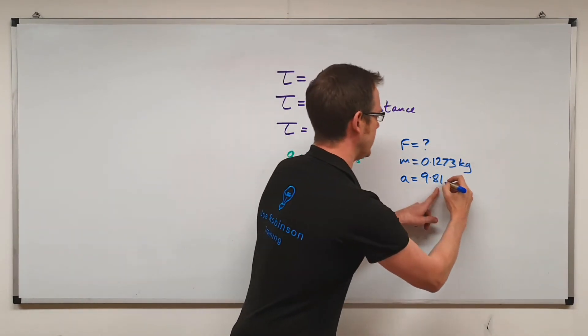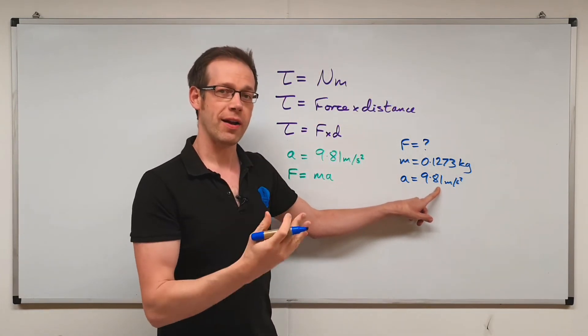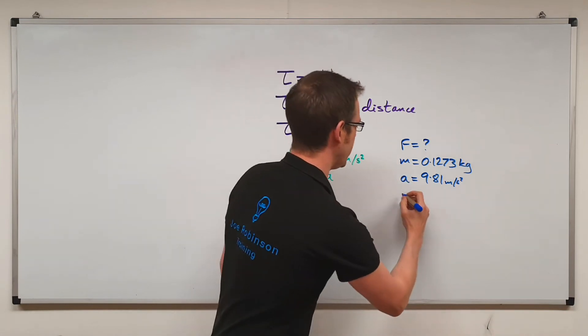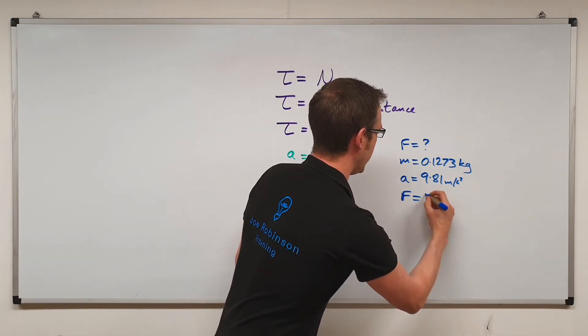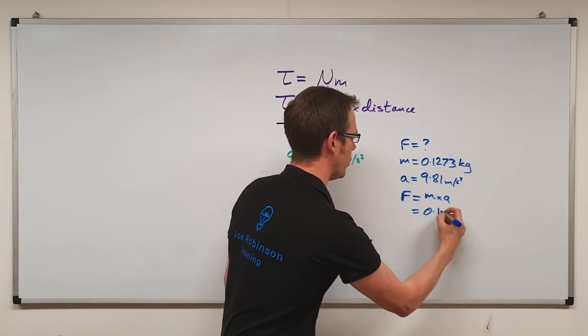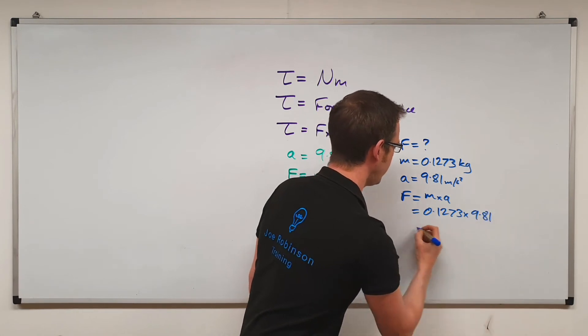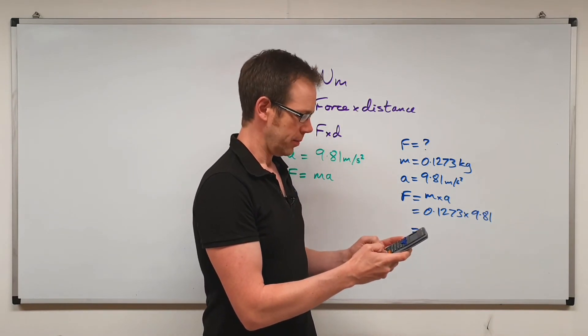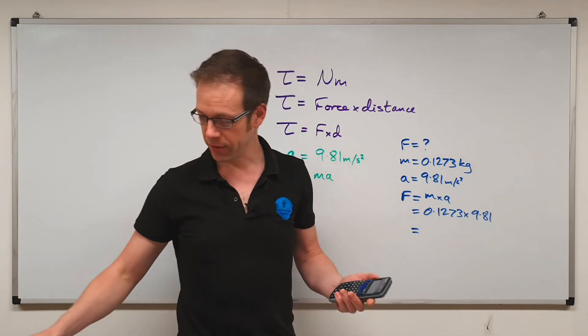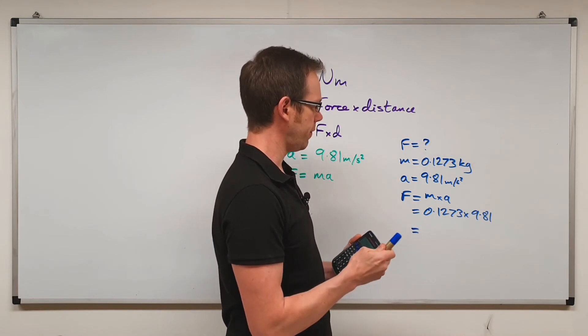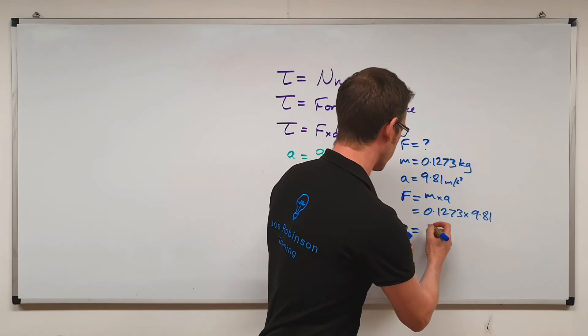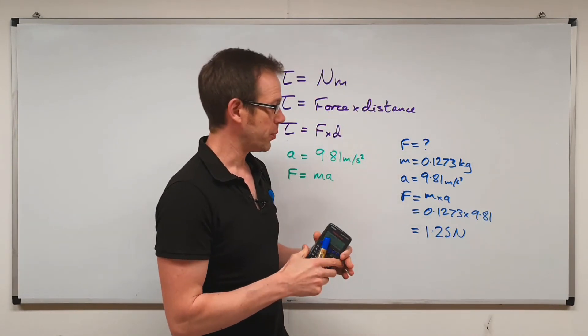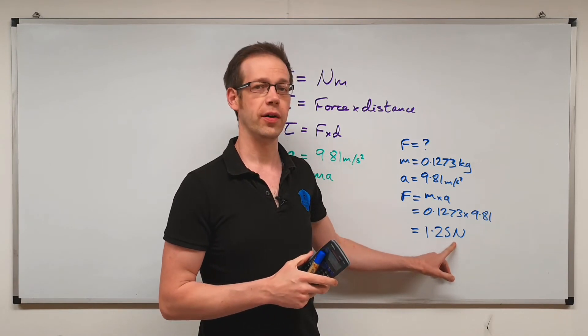And we've got this mathematical constant for the acceleration, which is 9.81. So remember, this is acceleration in meters per second squared, but it's also the value for gravity that is pulling that spanner down towards the surface of the Earth. And so we've got a very simple calculation to do now. F is equal to mass times by acceleration. So that gives us 0.1273 times by 9.81. So we'll just pop that into the calculator, 0.1273 multiplied by 9.81. And that's going to give us a total force in this case of 1.25 newtons.